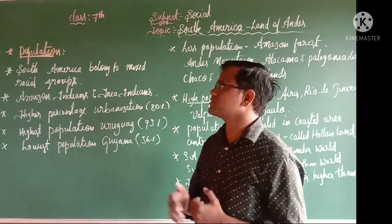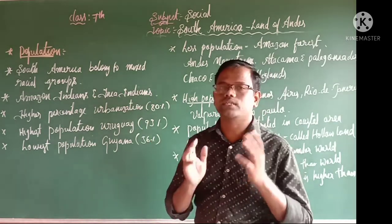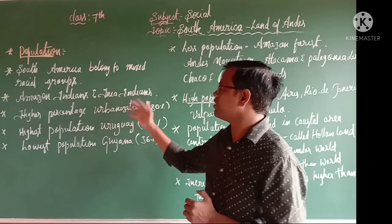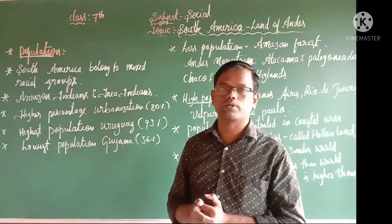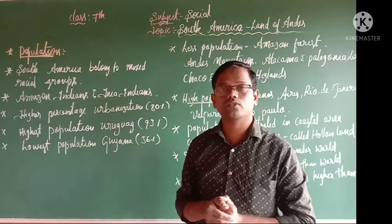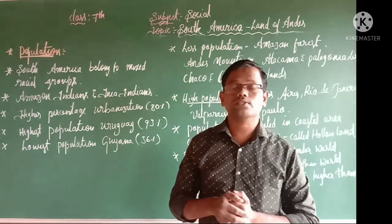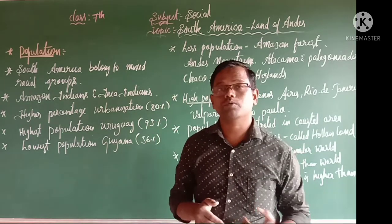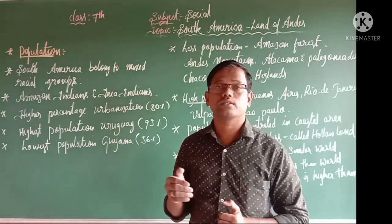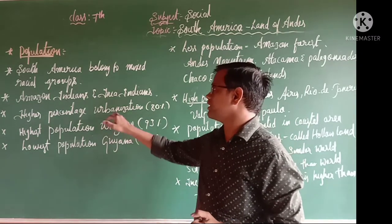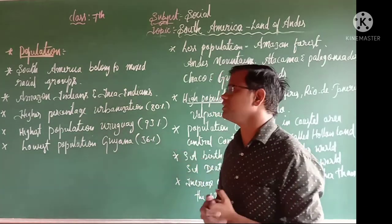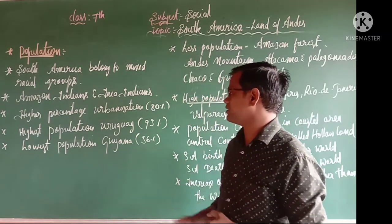South America belongs to mixed racial groups like Amazon Indians and Inca Indians, who are native people that settled before the arrival of Europeans. Europeans came to South America searching for gold and later settled, bringing slaves from Africa to work on plantations. Intermarriage among these groups caused further mixed races. The highest percentage of population in South America is urbanized at nearly 80%. Uruguay has the highest urbanization at 93%, while Guyana has the lowest at 36%.